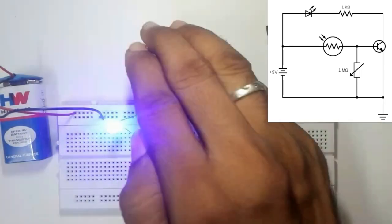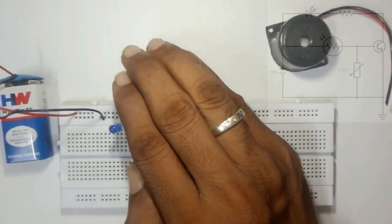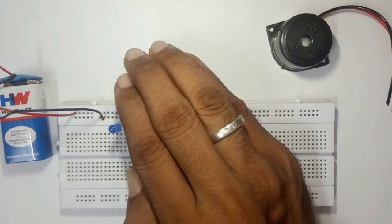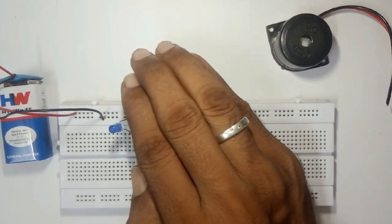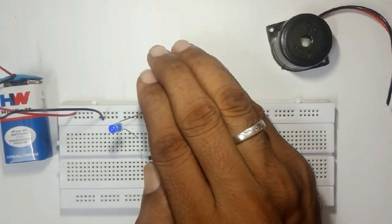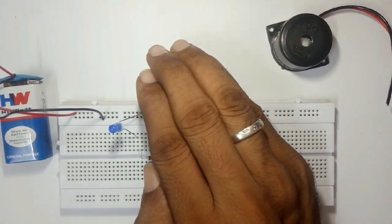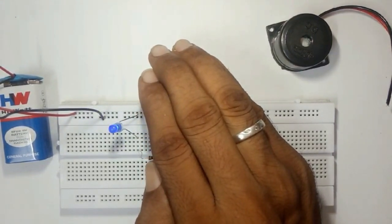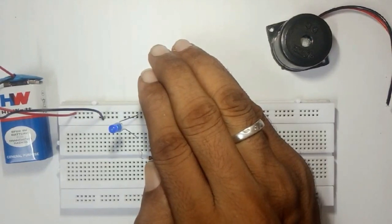So here, one more thing I want you to closely examine. Now the LED is completely off, so I'm going to just allow few lights to fall on the LDR. Can you see this? The moment I just allow few light to fall on the LDR it's glowing.